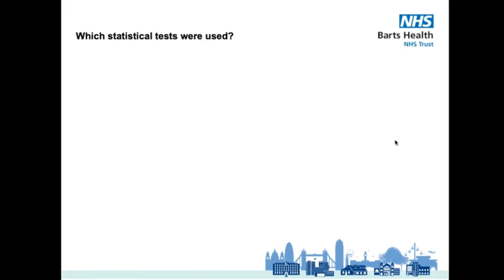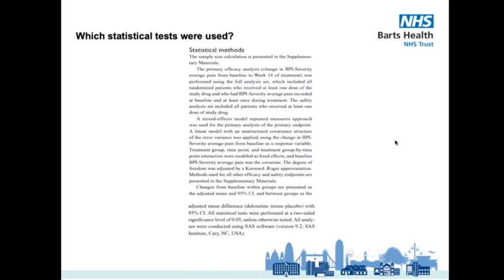Our penultimate consideration point asks: which statistical tests were used? The statistical analysis method section on page 811 tells us this, with many standard tests employed. You should always see these details provided within the methodology section of a randomised controlled trial for transparency and reproducibility. If you don't see such details included, that's another big red flag.